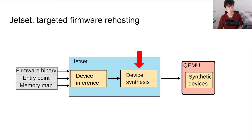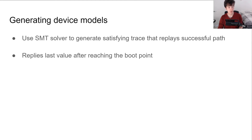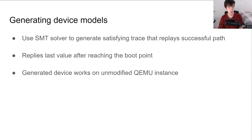I've demonstrated how JetSet searches for a path to the boot point, but how does it actually use this path to construct a peripheral model? To generate a synthetic hardware device from the successful path, JetSet uses an SMT solver to generate concrete device read return values that satisfy the constraints to reach the boot point. On a device read after the boot point, the device plays back the last satisfying value read from that address. The model JetSet creates can be used in an emulator like QEMU with no further intervention by the symbolic execution engine.